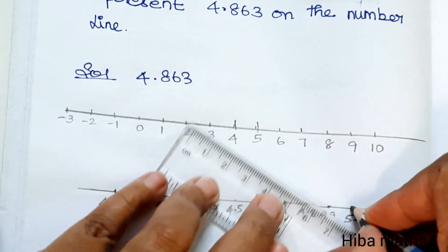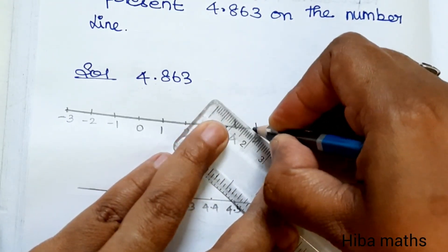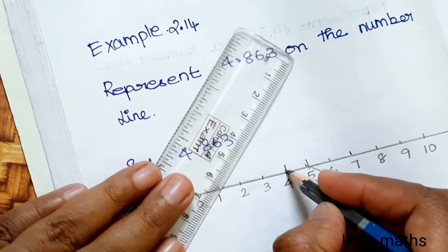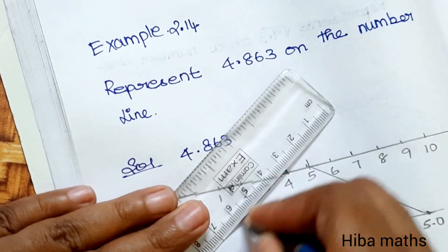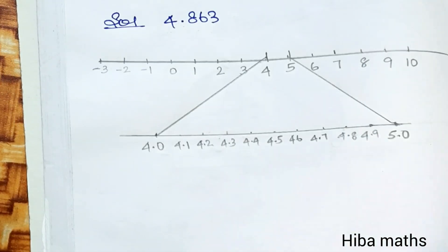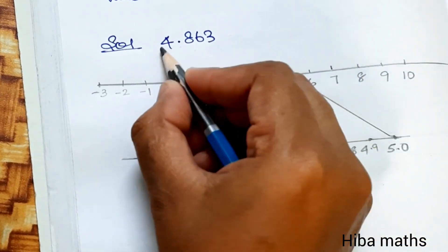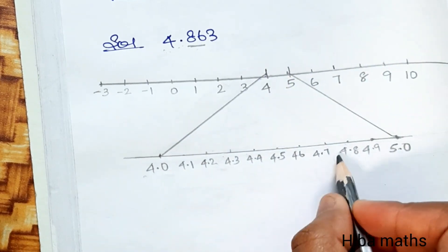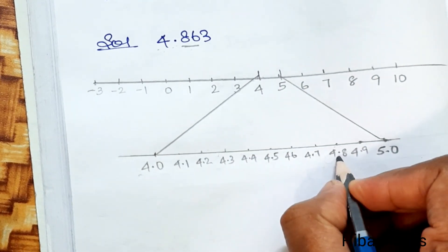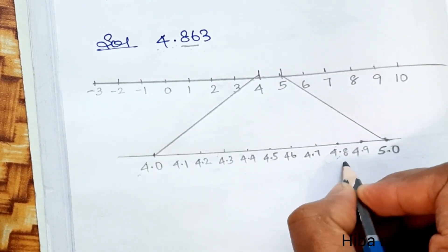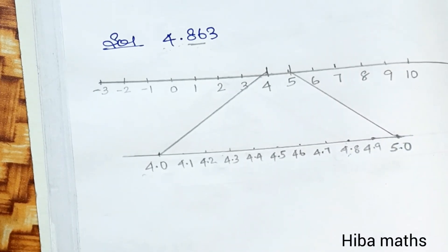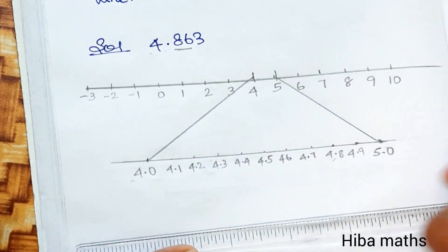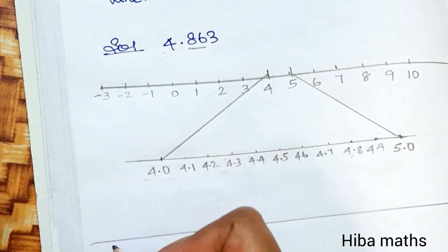5.0 joins with 5. So between 4.0 and 5.0, we have located 4.8. Now we zoom in between 4.8 and 4.9.